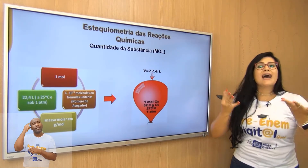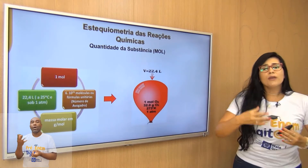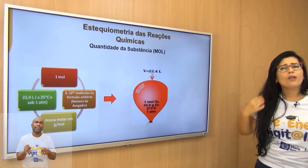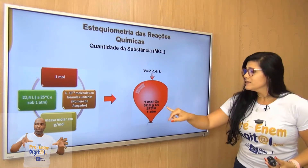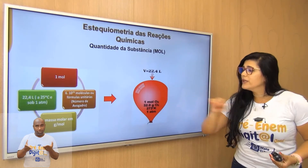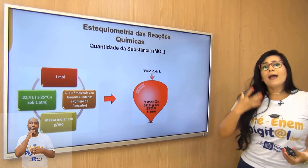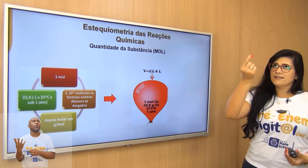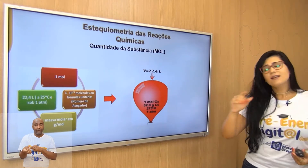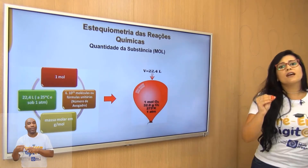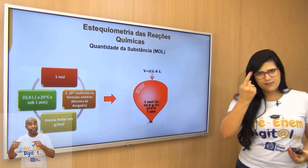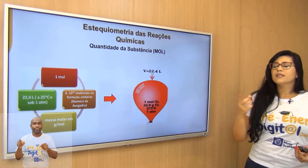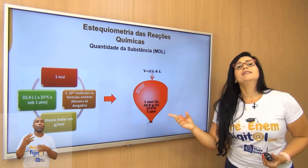E se eu for pensar em massa — quantidade em massa — quanto eu tenho em um mol de qualquer substância? Eu vou ter a sua massa molar, que é a soma das massas molares dos elementos que compõem essa substância. Por exemplo, O₂: a massa molar é 16 × 2 = 32 gramas por mol. Esse balão tem um mol de oxigênio, que pesa 32 gramas.